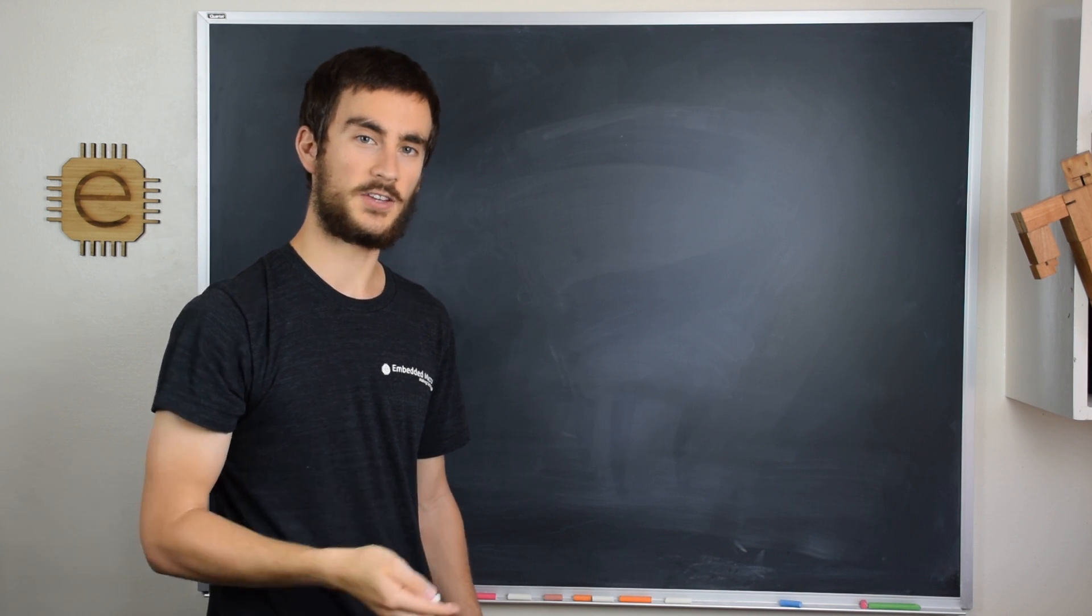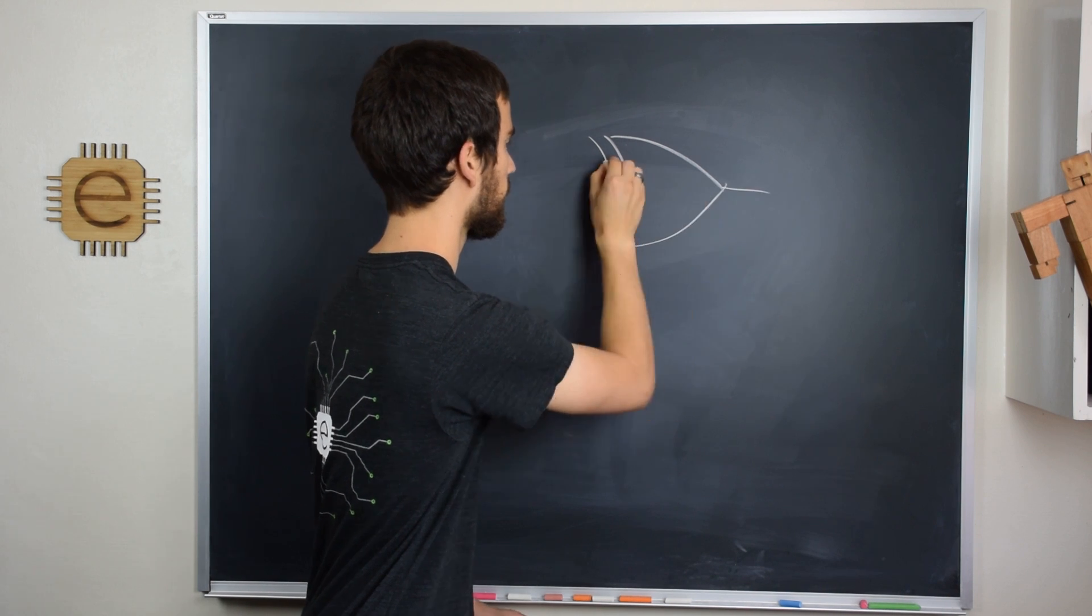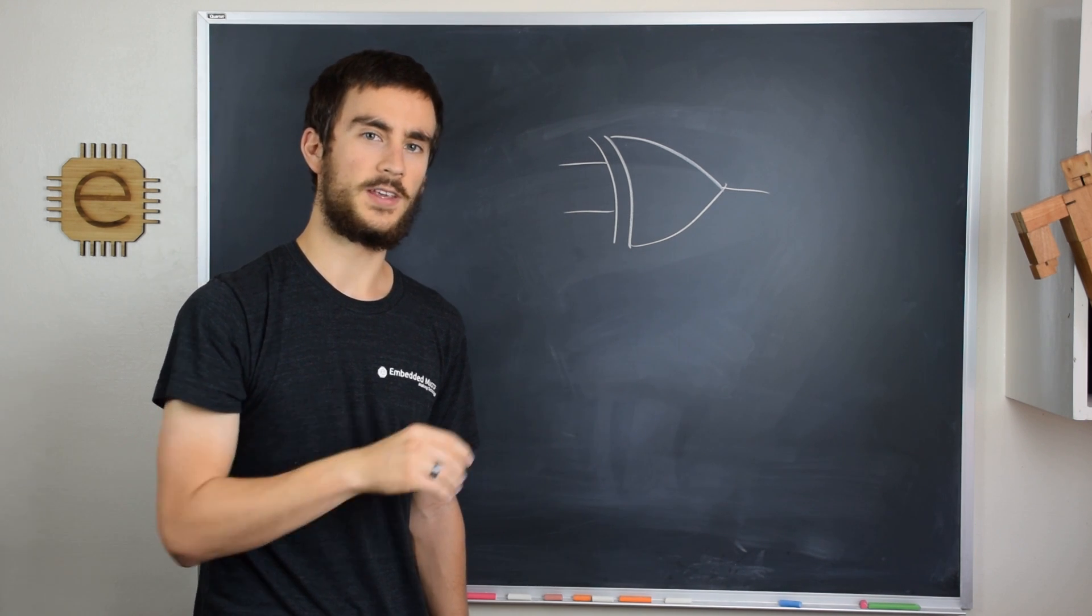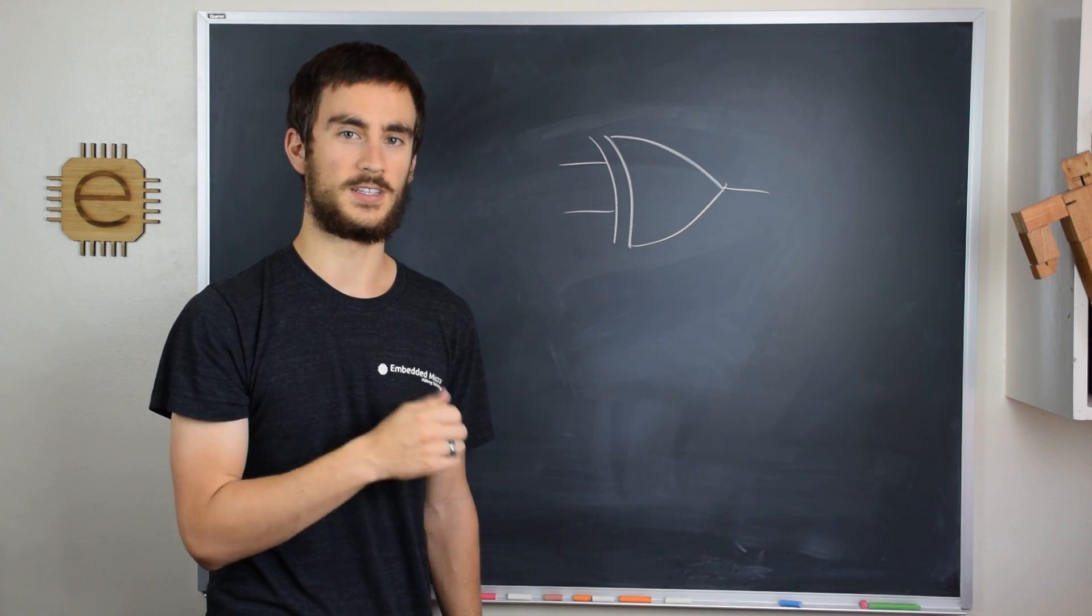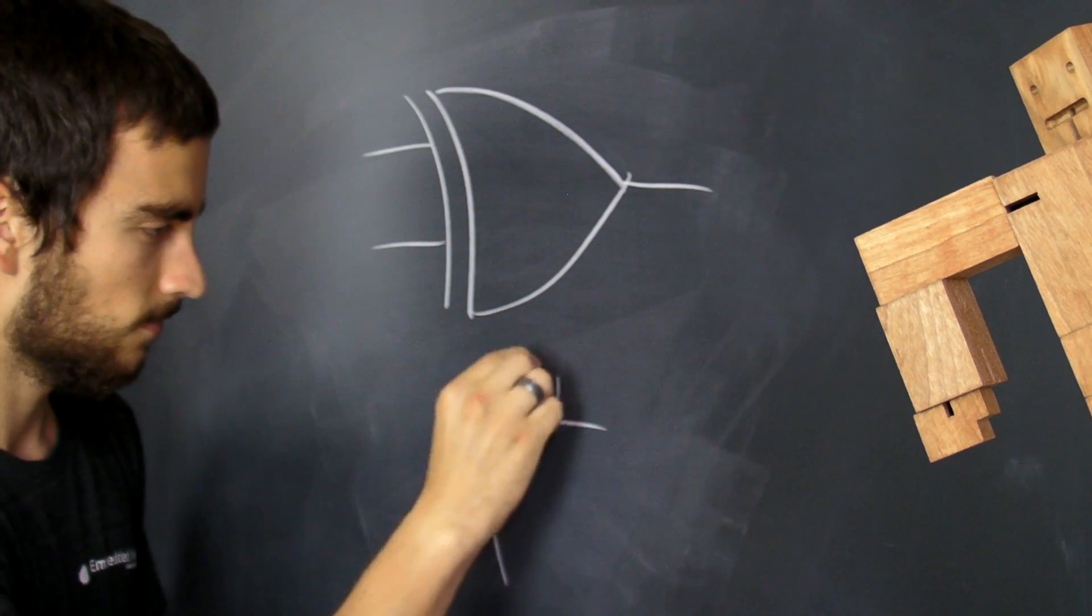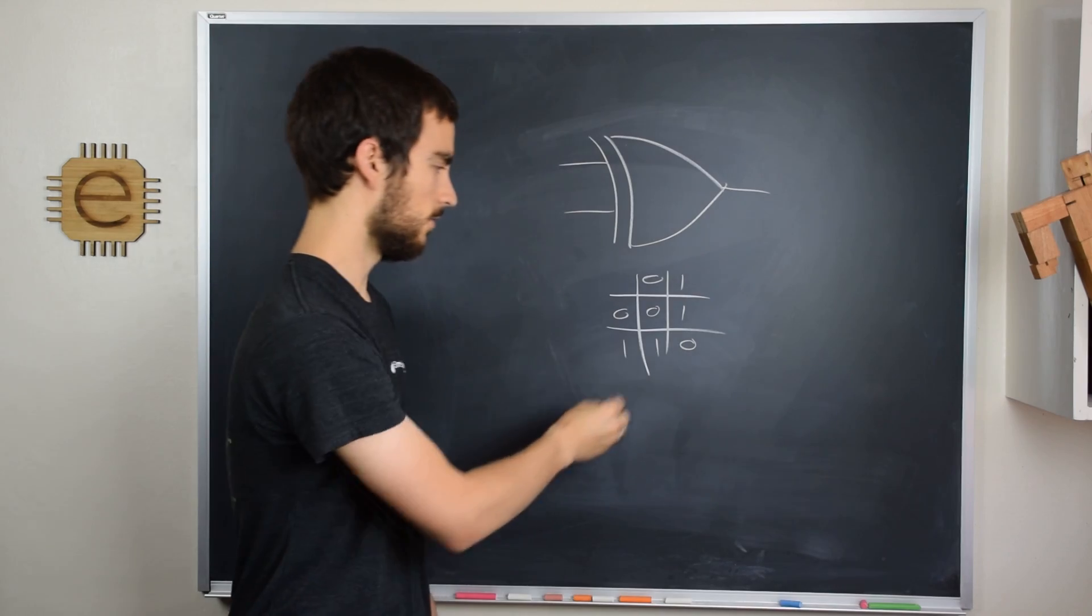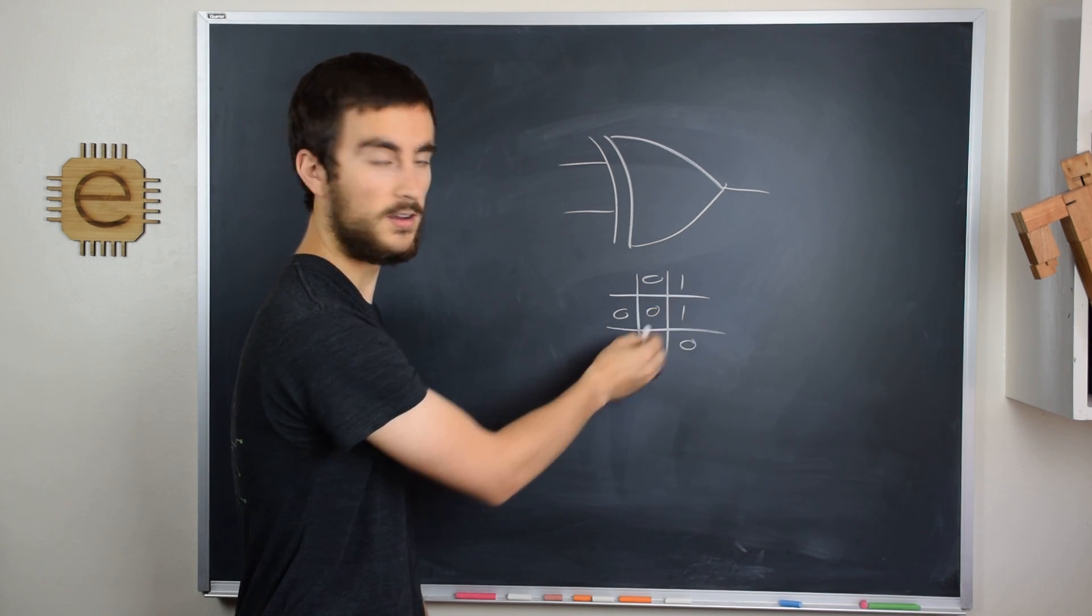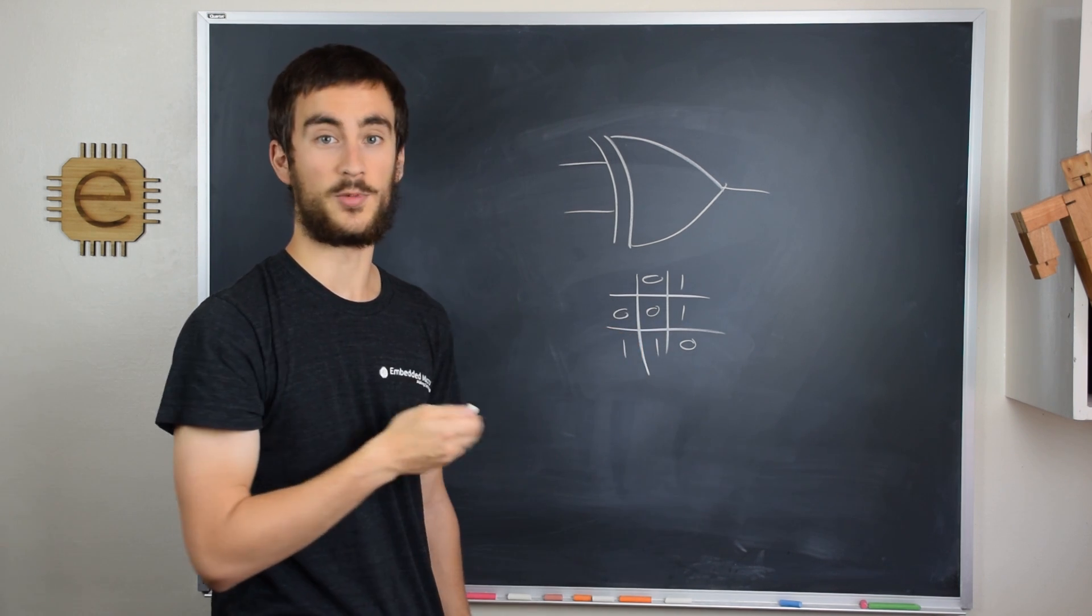Finally, the last gate is an XOR gate, and it has a symbol that looks like this. What an XOR gate does is that it only outputs 1 if either of the inputs are 1, but not both. In other words, it's an exclusive OR. So it has a truth table like this. So you can see it's only outputting 1 when one of the inputs is 0 and the other input is 1. When both of them are 1 or both of them are 0, it outputs 0. So it's only 1 when the outputs are different.